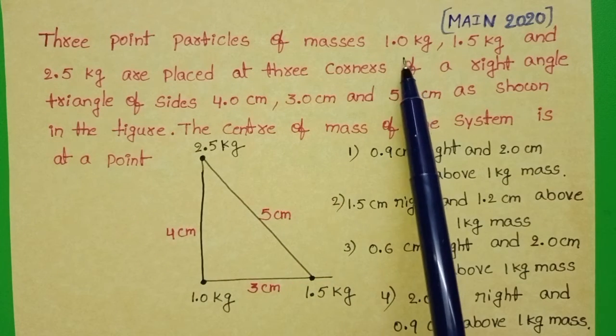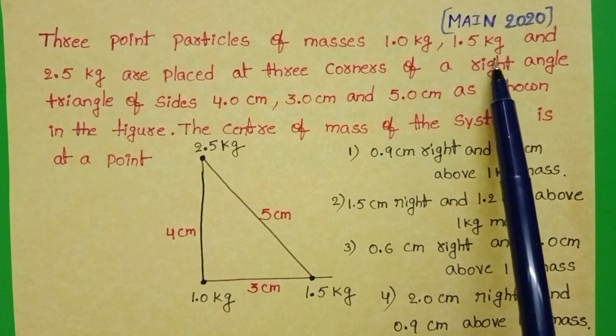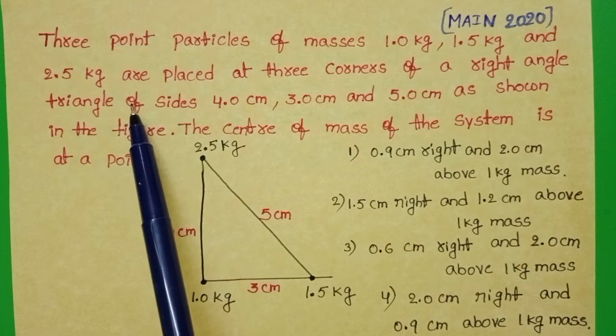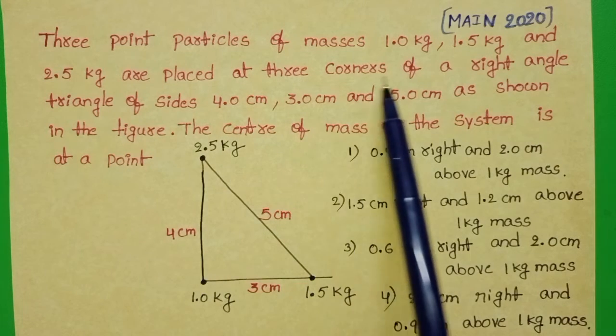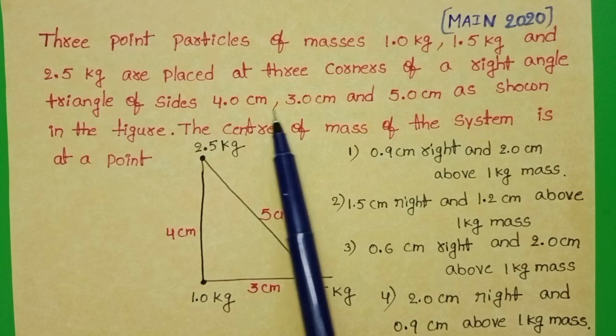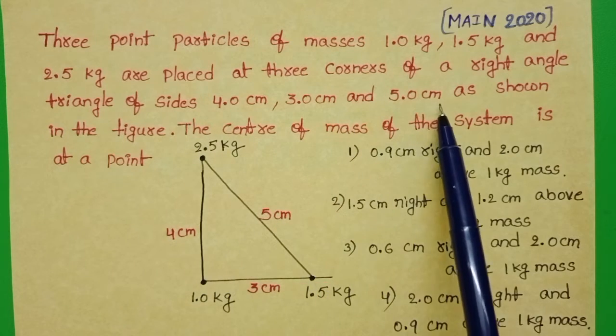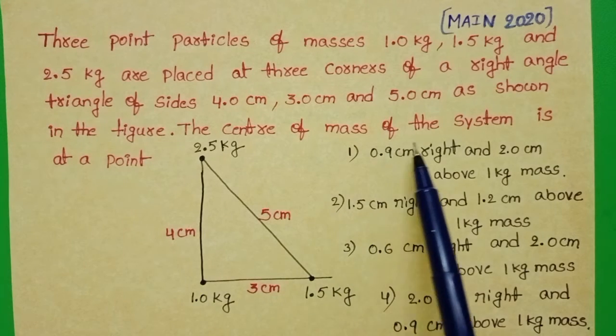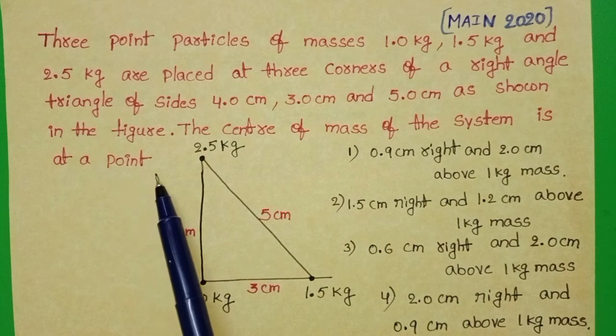Three point particles of masses 1 kg, 1.5 kg and 2.5 kg are placed at three corners of a right angle triangle of sides 4 cm, 3 cm and 5 cm as shown in the figure. The center of mass of the system at a point.